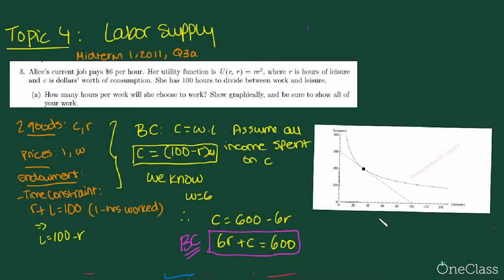Now we're going to look at a question from midterm 1 in 2011, question 3A. Alice's current job pays $6 per hour. Her utility function is U of C and R, which is equal to R times C squared, where R is hours of leisure and C is dollars worth of consumption. She has 100 hours to divide between work and leisure.